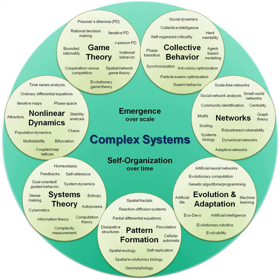Although it is arguable that humans have been studying complex systems for thousands of years, the modern scientific study of complex systems is relatively young in comparison to established fields of science such as physics and chemistry. The history of the scientific study of these systems follows several different research trends. In the area of mathematics, arguably the largest contribution to the study of complex systems was the discovery of chaos in deterministic systems, a feature of certain dynamical systems that is strongly related to nonlinearity. The study of neural networks was also integral in advancing the mathematics needed to study complex systems. The notion of self-organizing systems is tied with work in non-equilibrium thermodynamics, including that pioneered by chemist and Nobel laureate Ilya Prigogine in his study of dissipative structures.